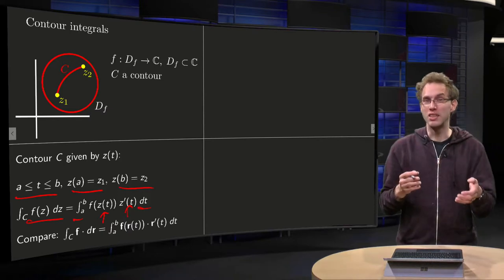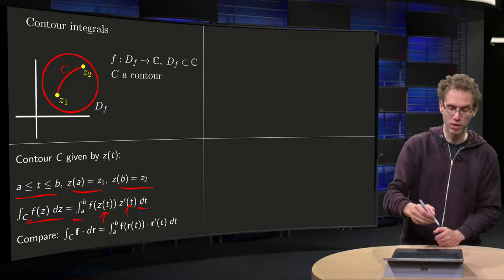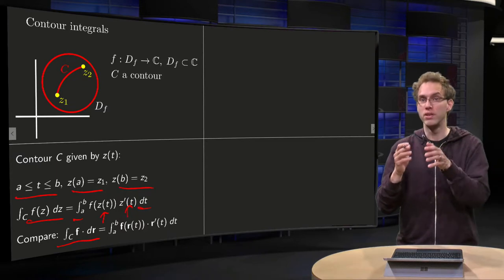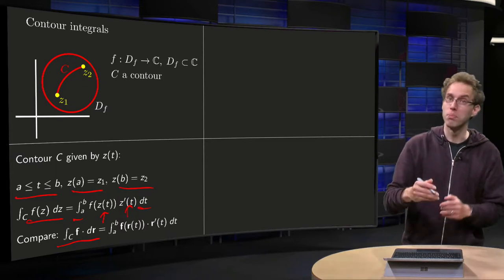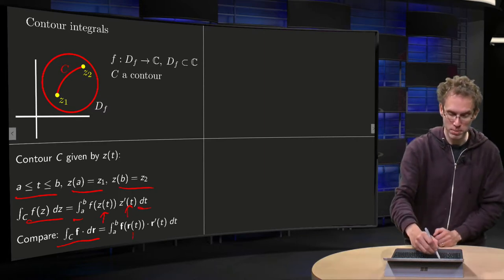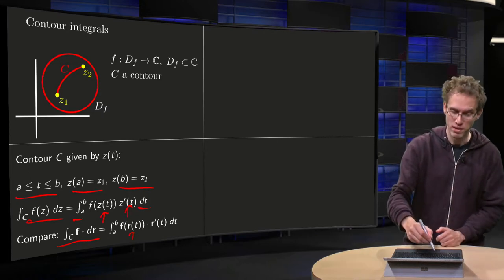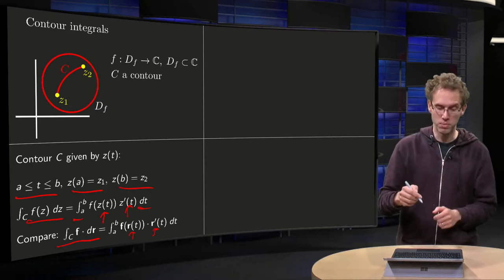Notice that this is really similar to the real integral, the line integral along a vector field. There if you have a line integral F dot dR, what do you need to do there? You parameterize of course your curve first by some R of T, plug your parameterization into F, take the dot product with R prime of T, and then you integrate with respect to T.